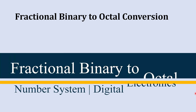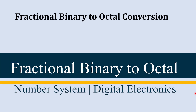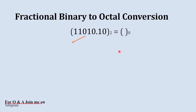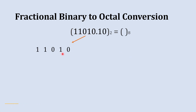In just two steps we are going to convert a fractional binary number into octal number. Here this is our fractional binary number and we are going to convert it into octal. So first we are going to start with the whole number part and write it — 11010 — separately.